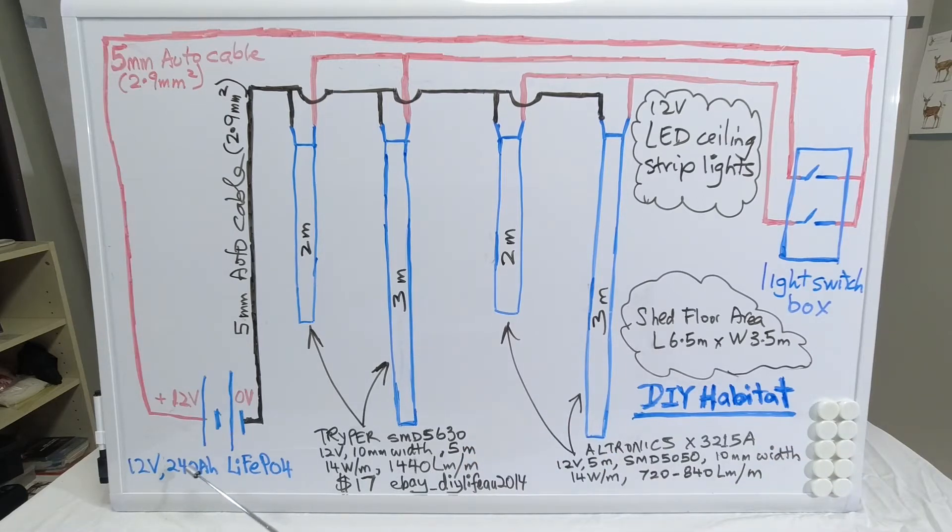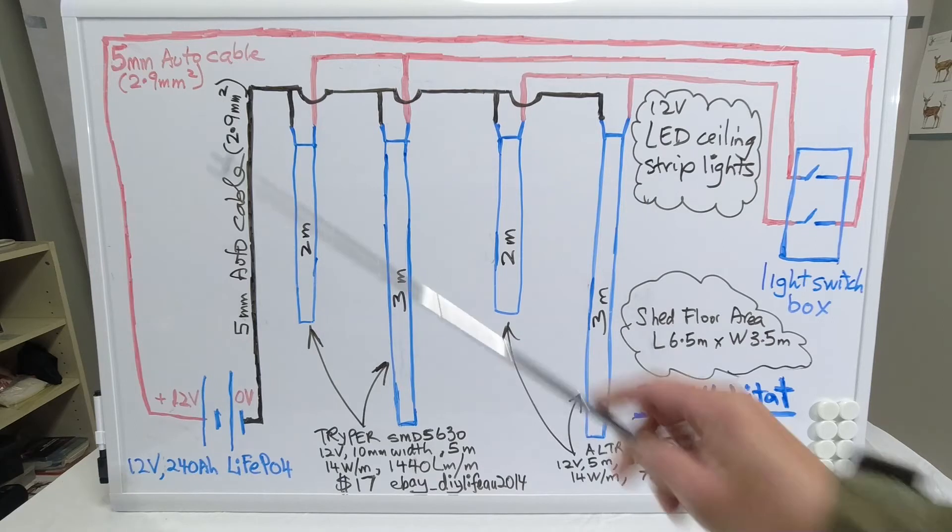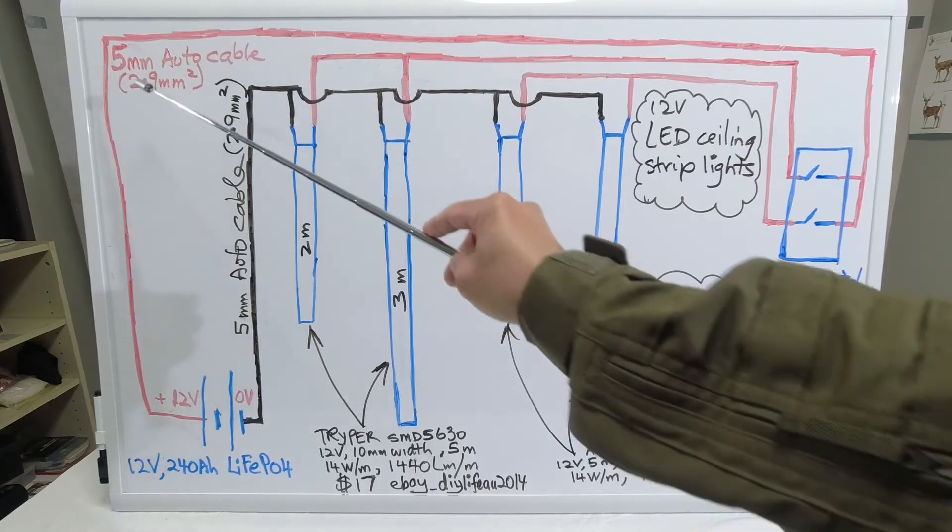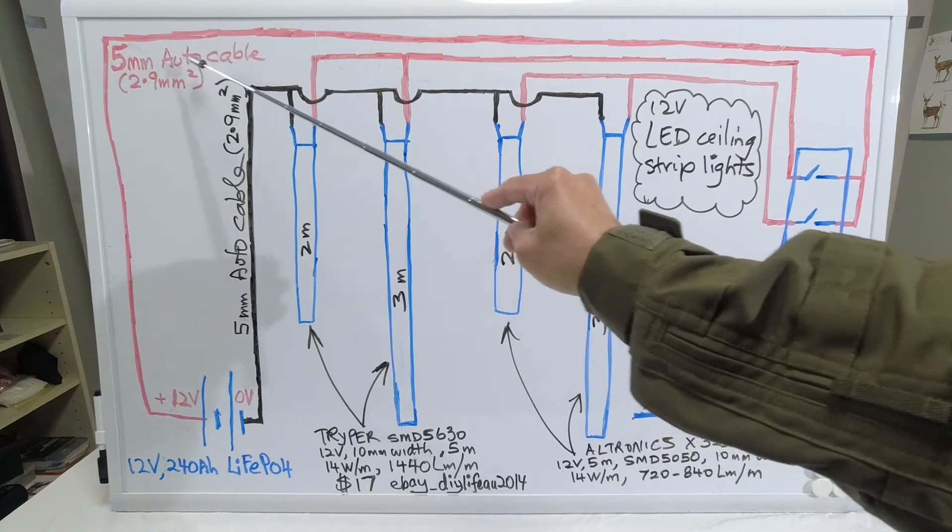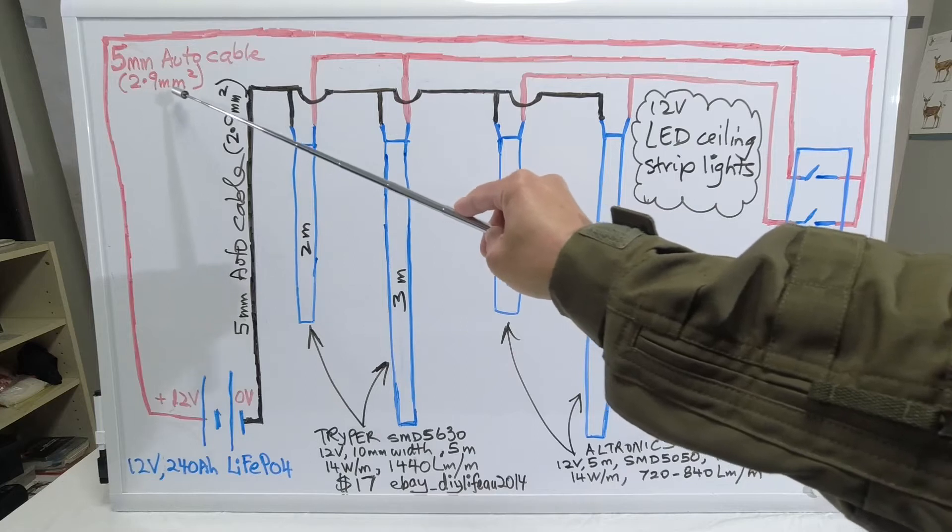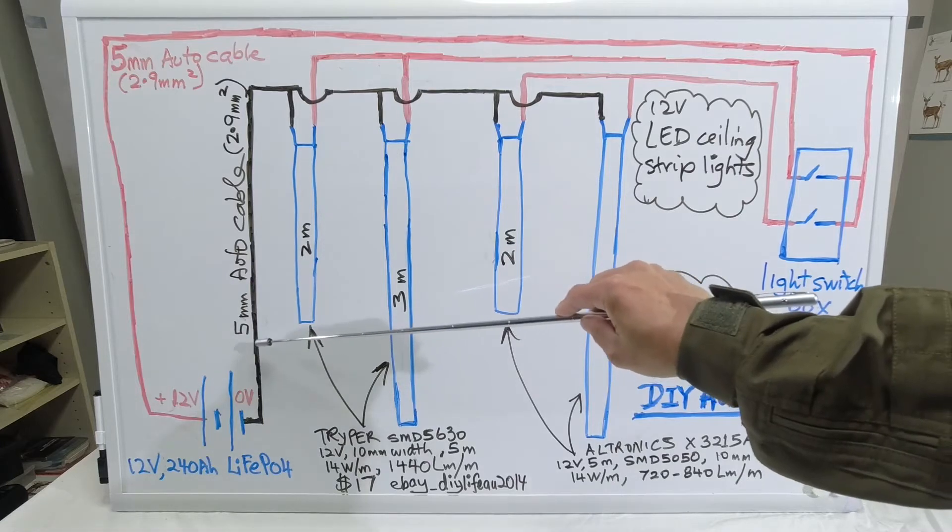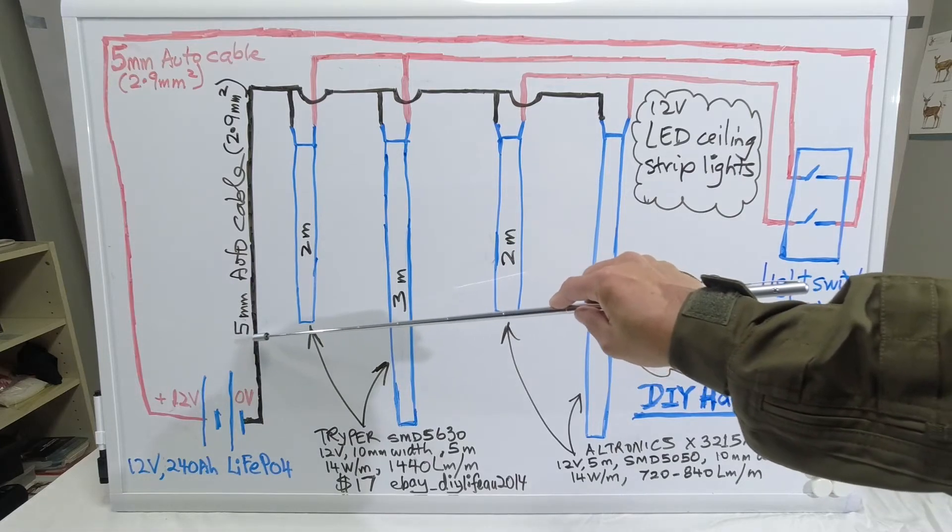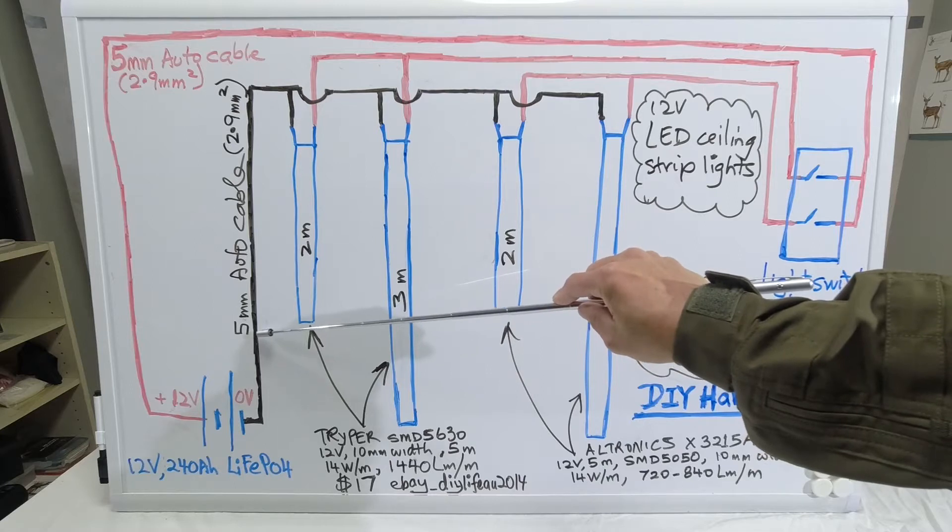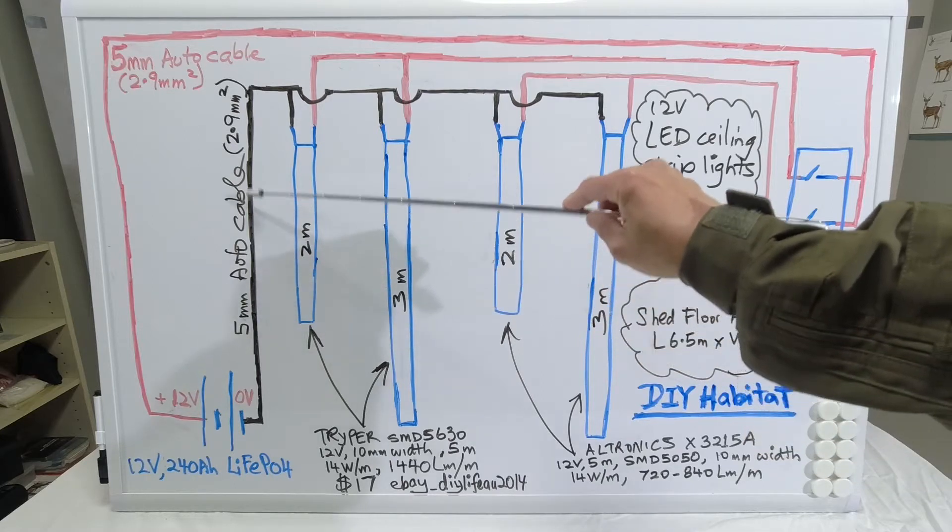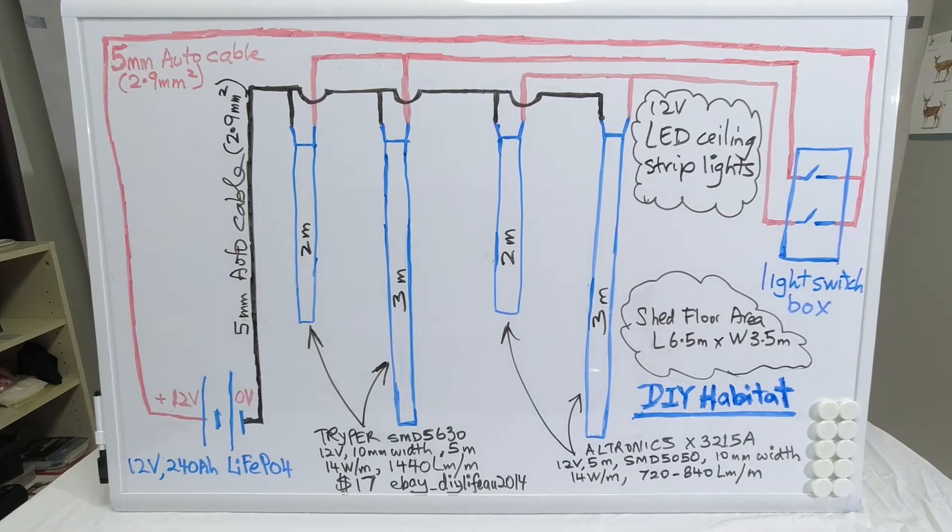The cable that I've used is 5mm auto cable which has a 2.9 millimeter square cross-sectional area. Similarly, the negative return cable is also a 5mm auto cable, 2.9 millimeter square cross-section.